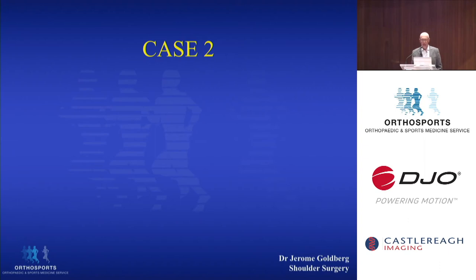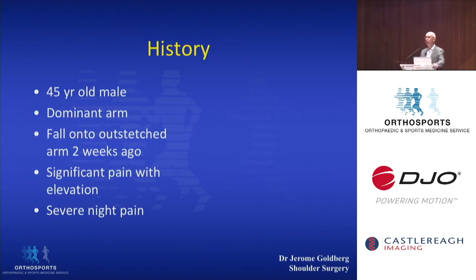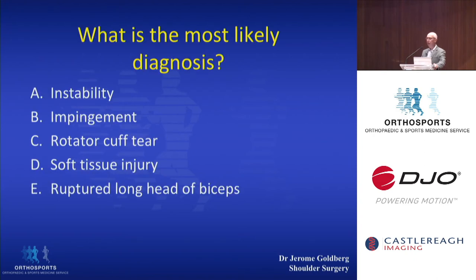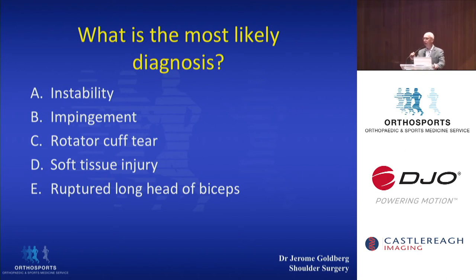Moving on to the second case: a 45-year-old male, dominant arm. Two weeks prior to presenting he had a significant fall onto his outstretched arm. He has significant pain with elevation and specifically a lot of night pain. By show of hands, the most likely diagnosis: instability? Impingement? Cuff tear? Soft tissue injury? And a ruptured long head of biceps.